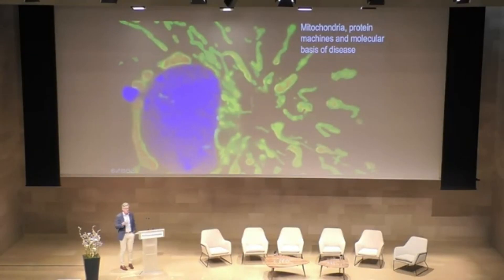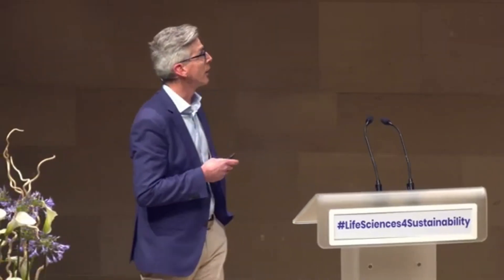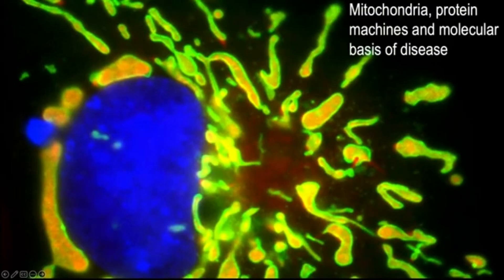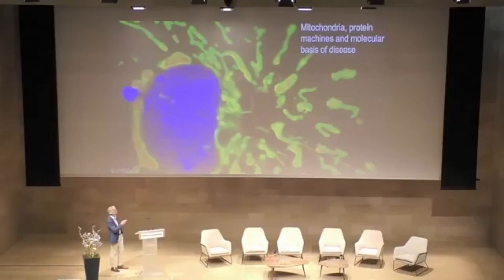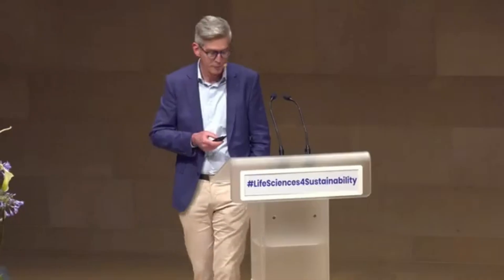I wanted to start with the area that I work on, and that's mitochondria. This is a cell here, the nucleus in blue, and these blobs are mitochondria. They've got a green outer membrane and a red inner matrix, and mitochondria are the fuel of life for eukaryotes.